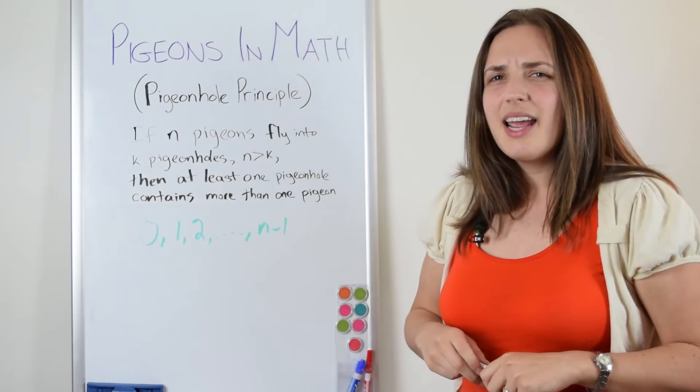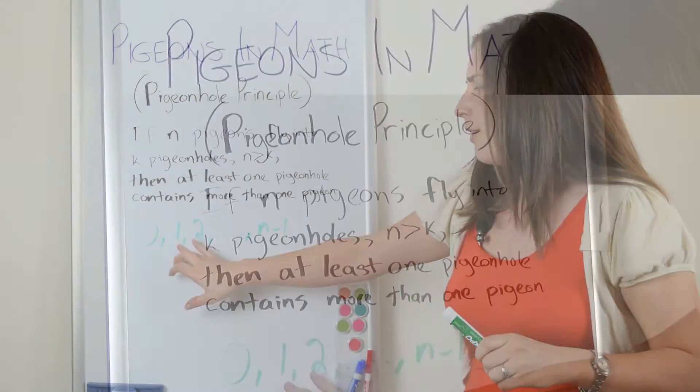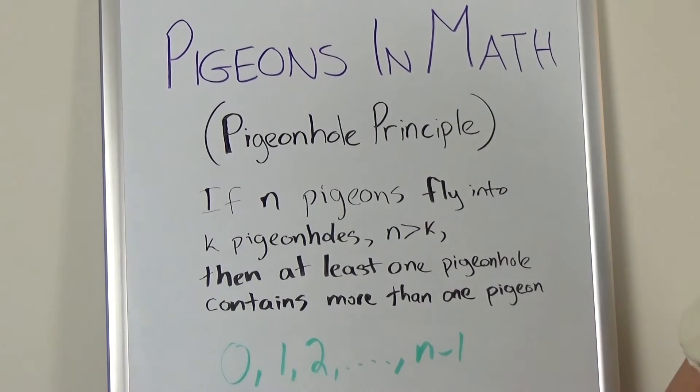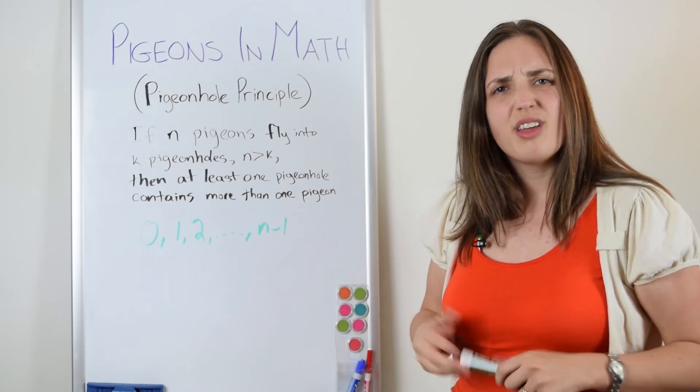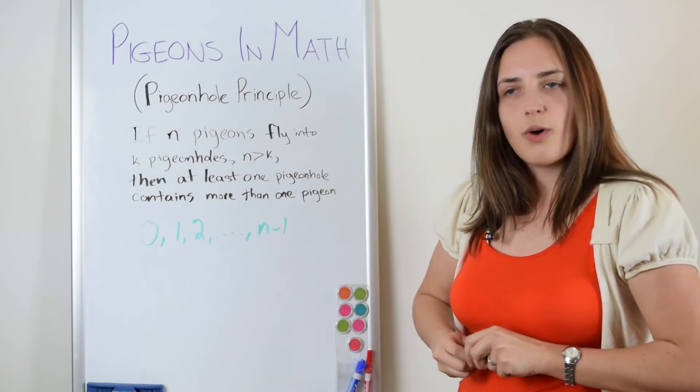And at the moment, I actually have n choices, right? Look, I have one through n minus one, as well as zero. So I have n options for the degree, and you might think the pigeonhole principle can't be used. But it can. Here's why.